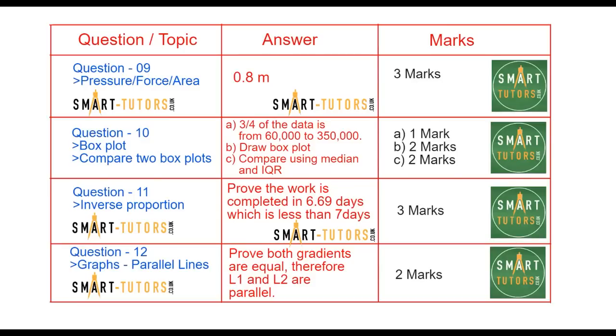Question number ten is box plots and comparing box plots. Question number eleven is inverse proportion: work completed in a certain number of days with a certain number of workers, how many days it takes to complete. That kind of question. Question number twelve is graphs, proving parallel lines.